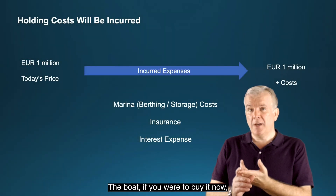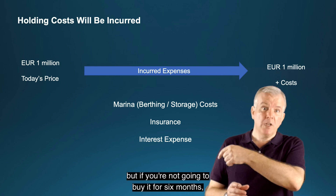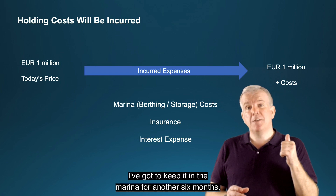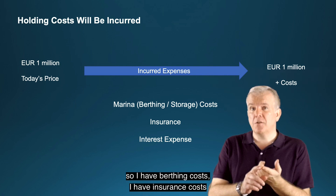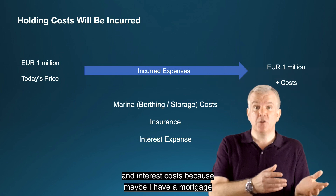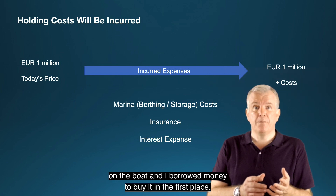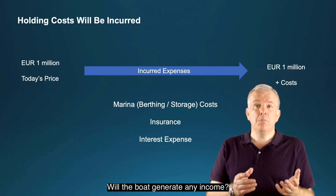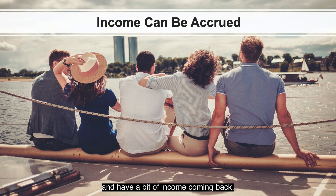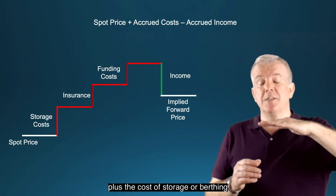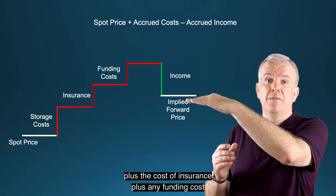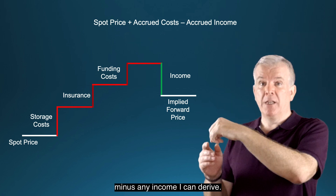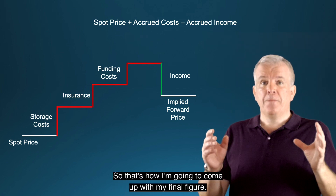But if you're selling the boat, what's going through your head? The boat, if bought now, would cost a million euros. But since you're not buying it for six months, the seller has to keep it in the marina — so there are birthing costs, insurance costs, and interest costs, because maybe there's a mortgage on the boat. But will the boat generate any income? Possibly — maybe you could charter it out and have some income coming back.